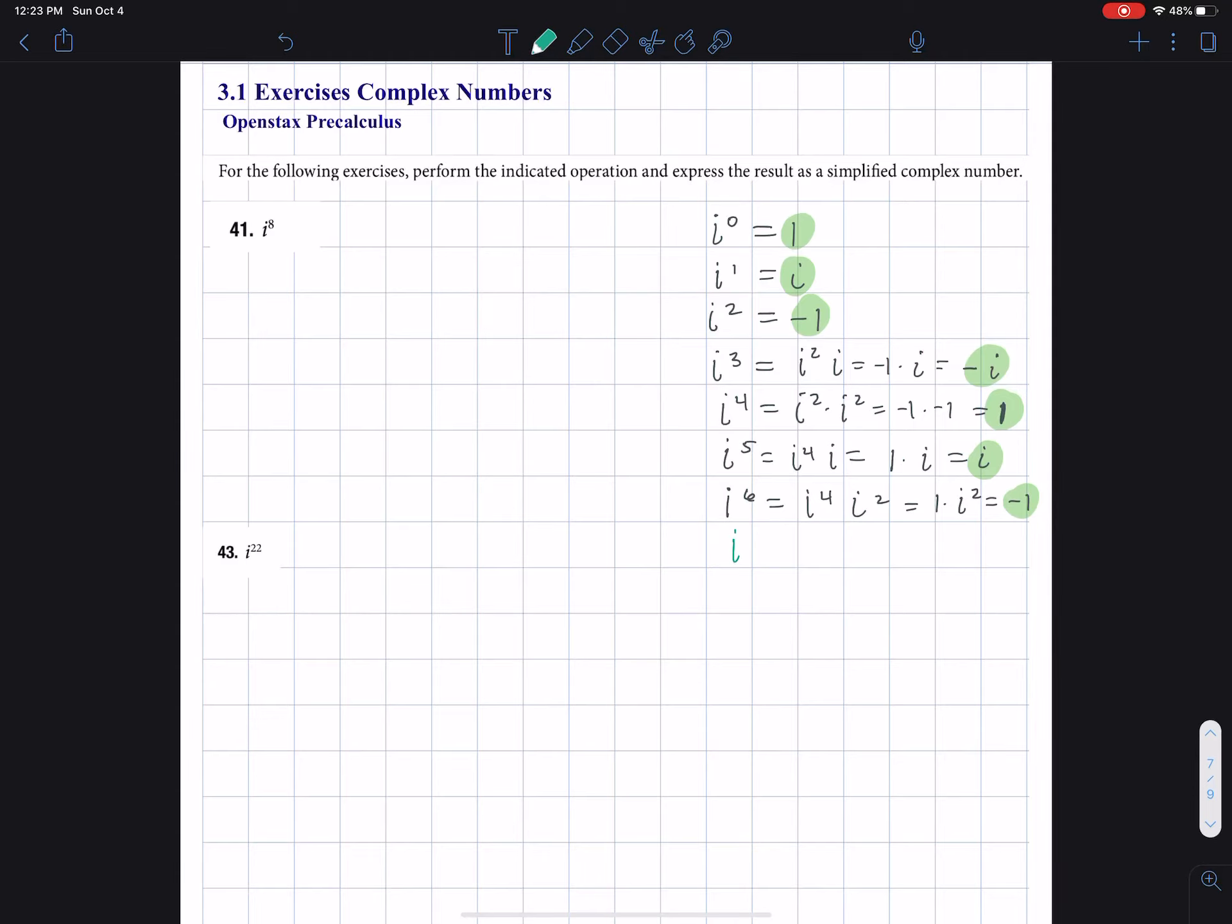Now I go to i to the seventh. i to the seventh is i to the fourth times i to the third. i to the fourth is one. i to the third, if I look above, is negative i. Then i to the eighth is i to the fourth times i to the fourth, which is one times one, which is one.